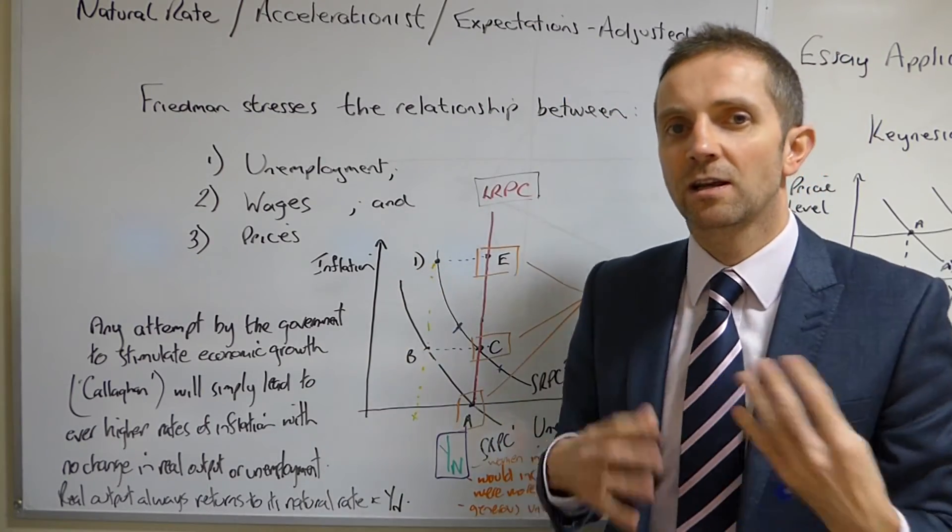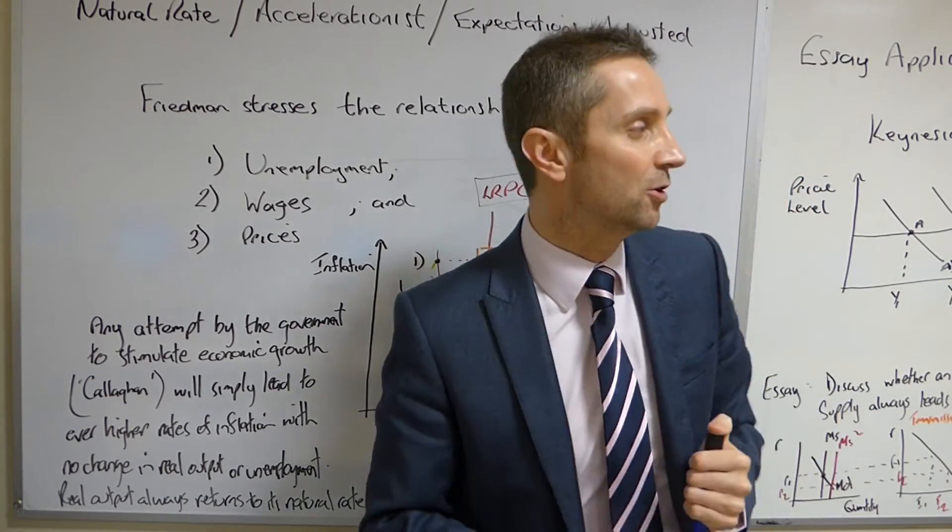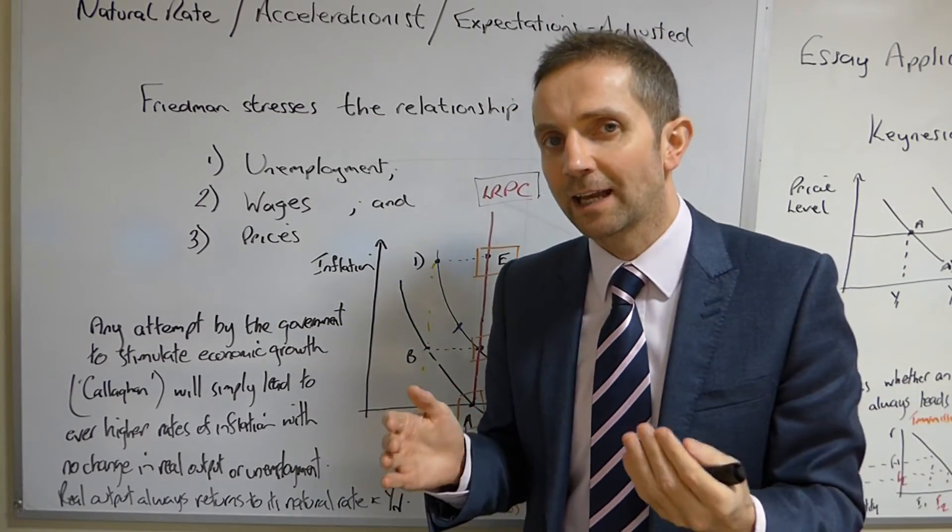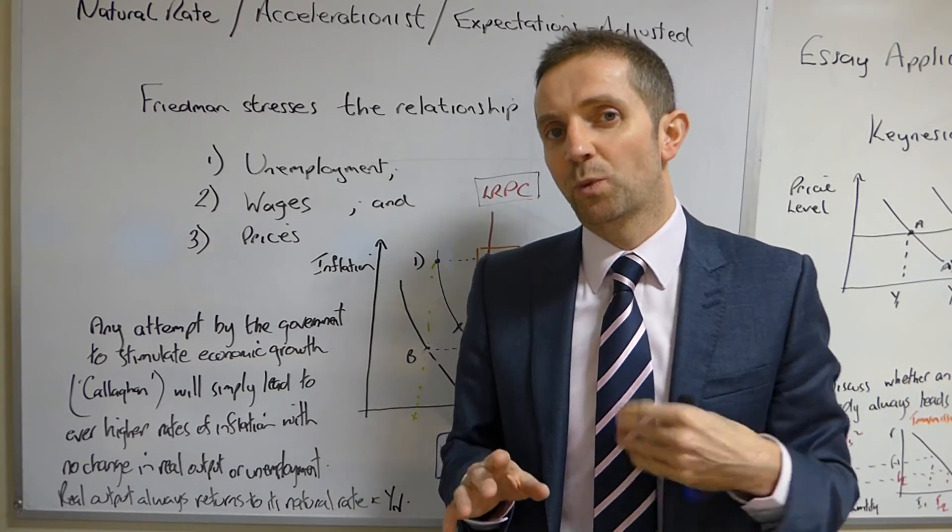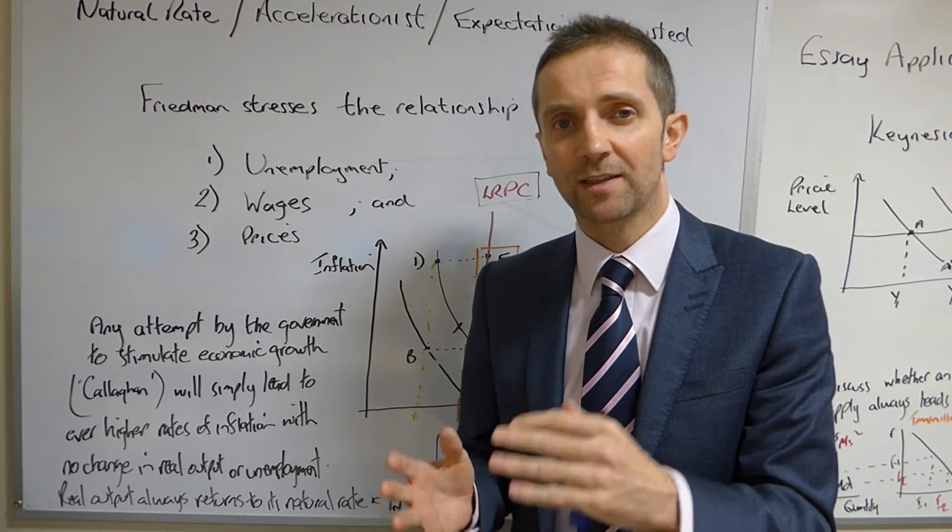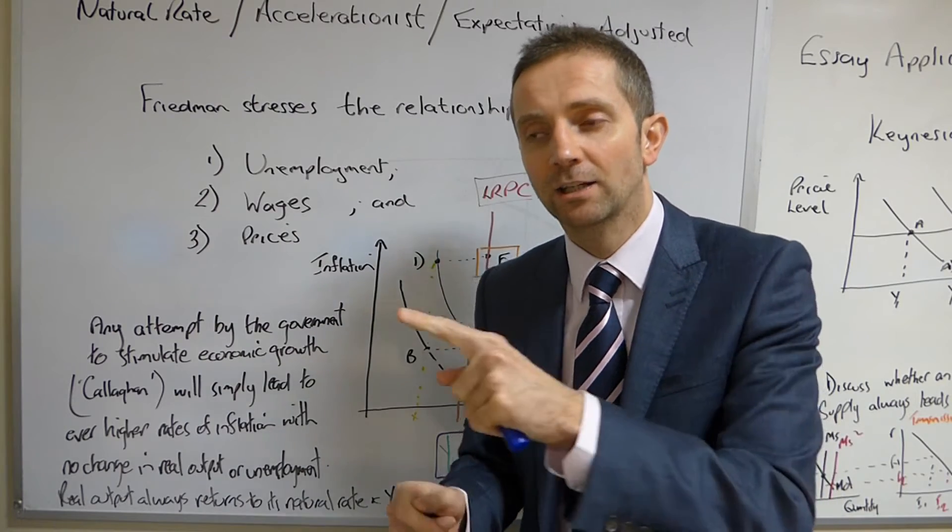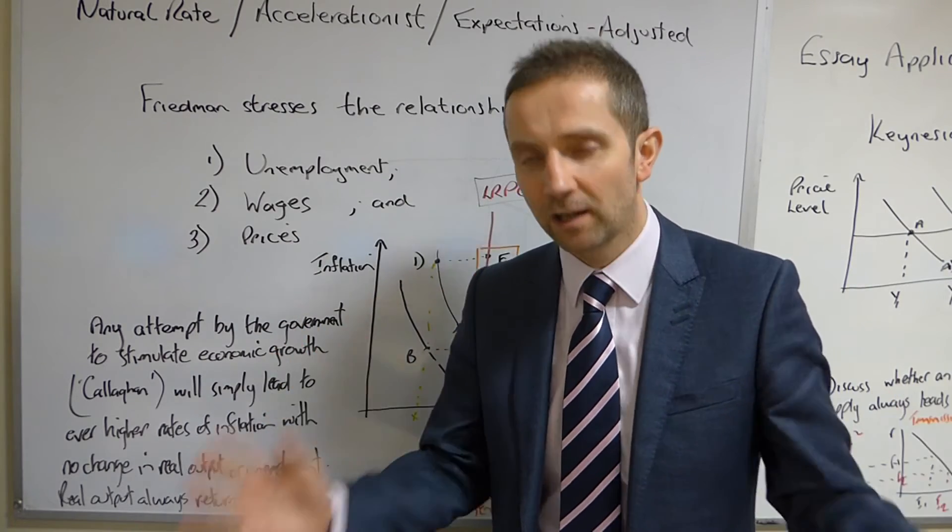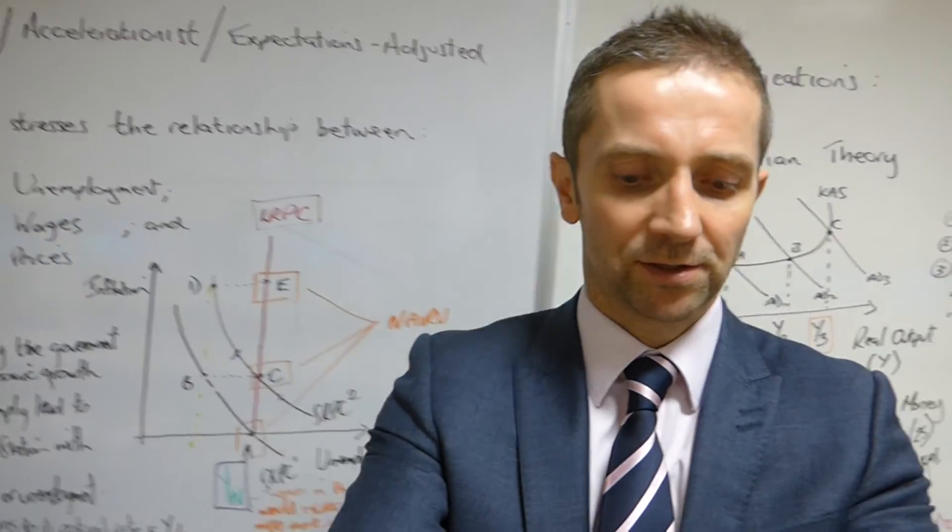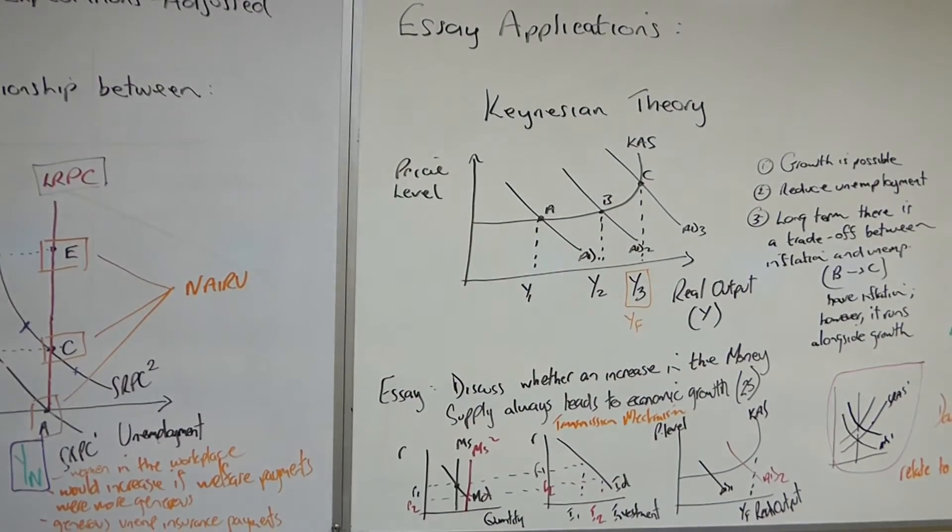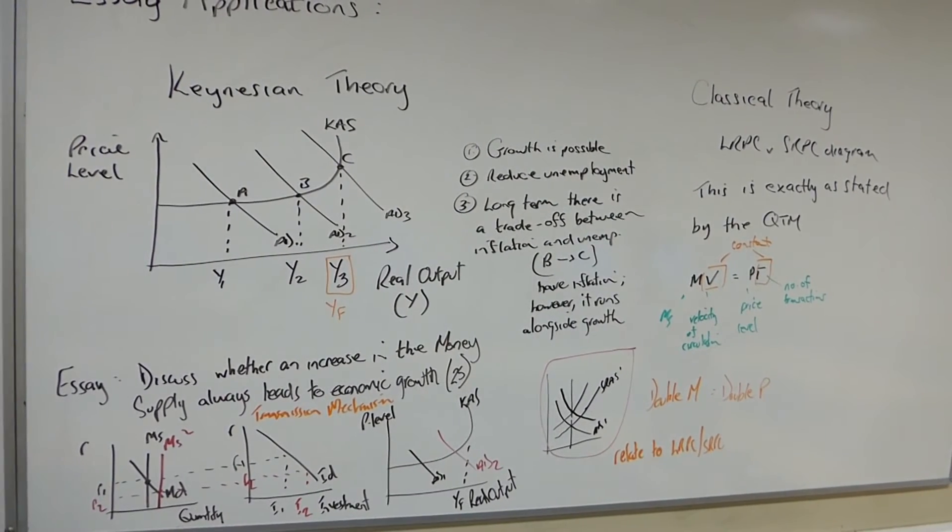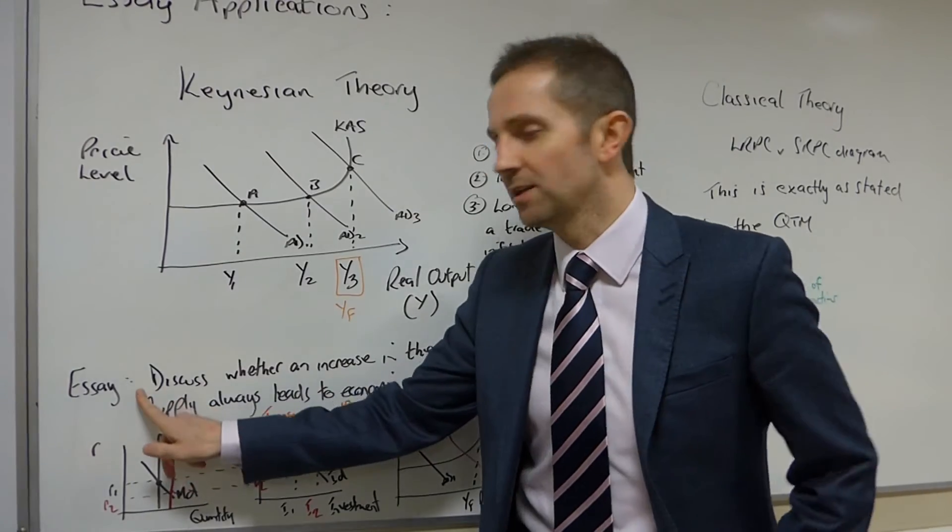So, that in a nutshell, that is the expectations adjusted classical theory with regard to inflation and unemployment. Now, if you get an essay, potentially you might get an essay, which asks you to discuss whether increasing the money supply would increase the level of real output and reduce unemployment. And this would be a great opportunity to compare and contrast Keynesian economics with classical economics. So, I'm just going to move the camera along. I hope you can read this. So, I've written a potential essay question here. Discuss whether an increase in the money supply always leads to economic growth at 25 marks.